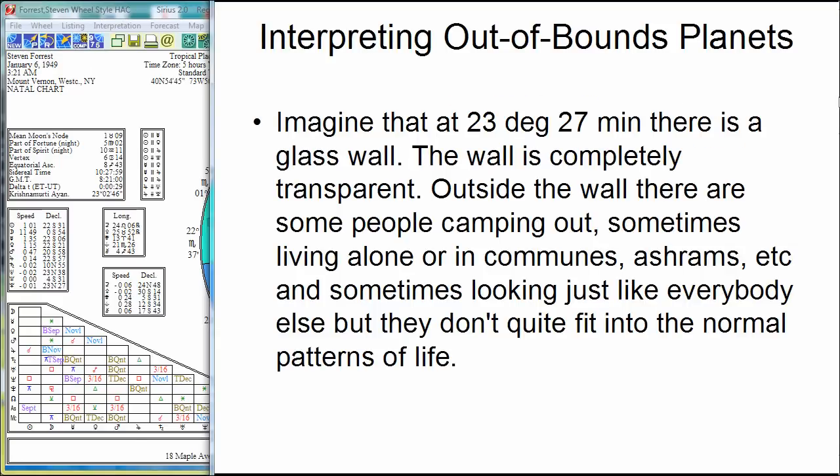So here's an image for you for interpreting out-of-bounds planets. Imagine that at 23 degrees 27 minutes of declination, there's a glass wall. And this wall is completely transparent. Now, let me stop right there and show you a diagram.